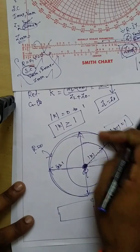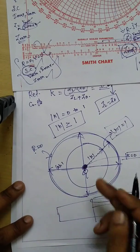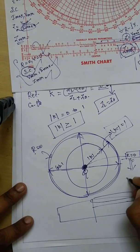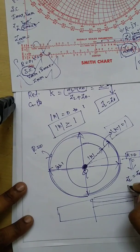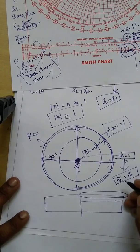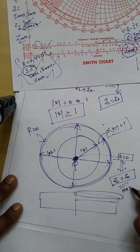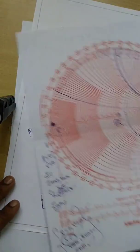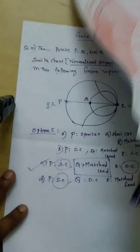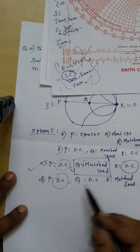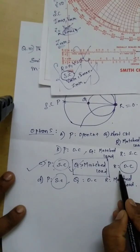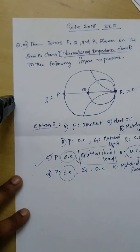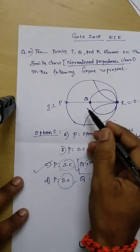The radius of the R equal to 0 circle is 1, so at the center point K equals 0. When K equals 0, it shows that your load and characteristic impedance are equal, meaning we have the matching condition. That is why in the given options, Q point is the matched load. So P is short circuit, R is open circuit, and Q is the matched load.